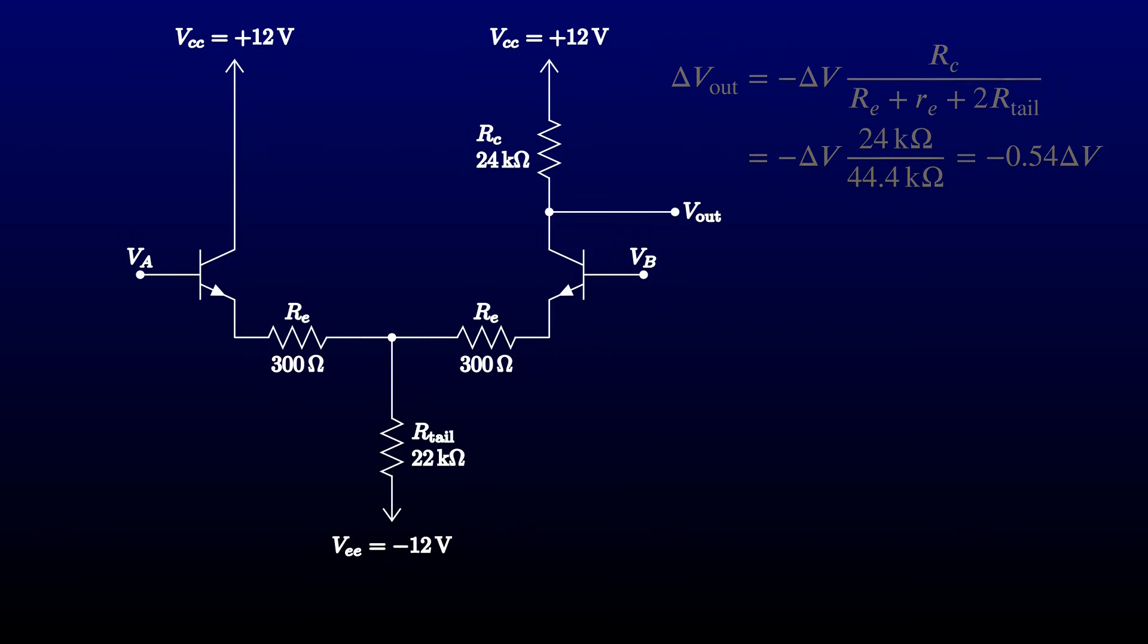Since our objective was to pull a small difference signal out of a lot of noise that was common to both inputs, we can now talk about a key figure of merit, the common mode rejection ratio. It's simply the absolute value of the differential mode gain divided by the common mode gain. For this circuit, that's 30 divided by 0.54 or 55.6. It's more usual to express it in decibels, and this circuit has a common mode rejection of just under 35 decibels. Let's see this circuit in action and see how close we came in our calculations.